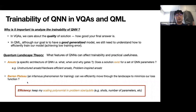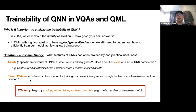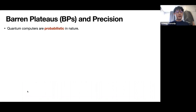Another major topic people study is barren plateaus — an infamous phenomenon that prevents you from training your quantum circuit. Basically, even though your circuit may be able to capture the solution, can you actually navigate through the landscape to find it? The key is efficiency: you want everything to scale polynomially in problem size — your number of shots, number of parameters, et cetera.